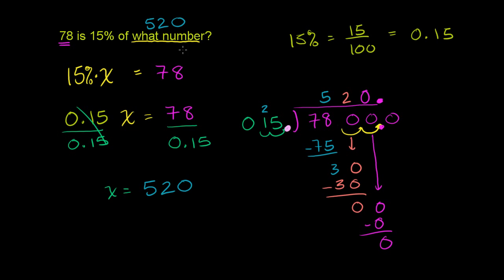And if we want to use some of the terminology that you might see in a math class, the 15% is obviously the percent. That is the percent. 520, or the what number before we figured out it was 520, that's what we're taking the percentage of. This is sometimes referred to as the base. That is the base. And then when you take some percentage of the base, you get what's sometimes referred to as the amount. So in this circumstance, 78 would be the amount. You could view it as the amount is the percentage of the base. But we were able to figure that out. It's nice to know those if that's the terminology used in your class.